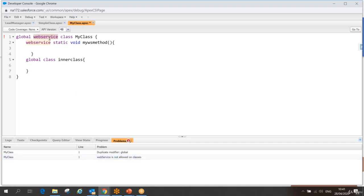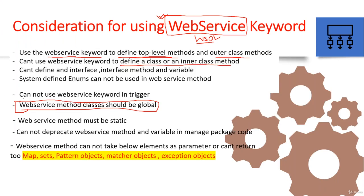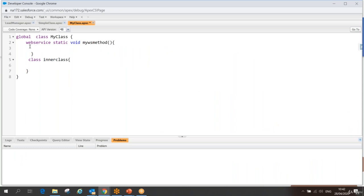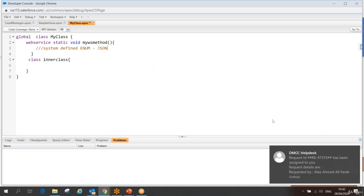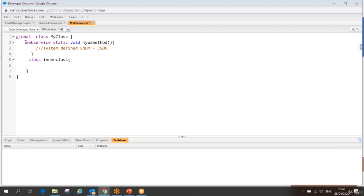Next, we cannot use the web service keyword on an interface, interface methods, or interface variables. The web service keyword is only allowed for class methods and variables — not for anything inside an interface. Additionally, inside a web service method you cannot reference system-defined enums, such as those found in JSON utilities.